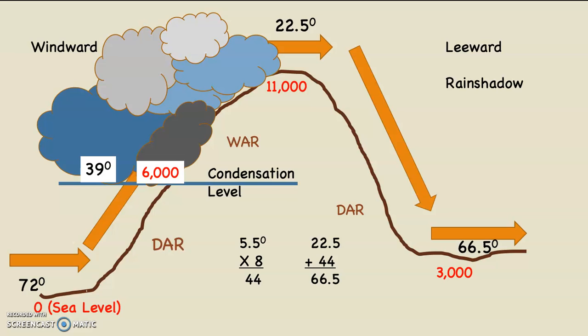However, the air is warming up. Because of that, we're not going to subtract — we're going to add. We take 22.5 degrees, which was the temperature at the top of the mountain at 11,000 feet, plus 44, which is the temperature the air warmed up en route to that 3,000-foot valley, which equals 66 and a half degrees.